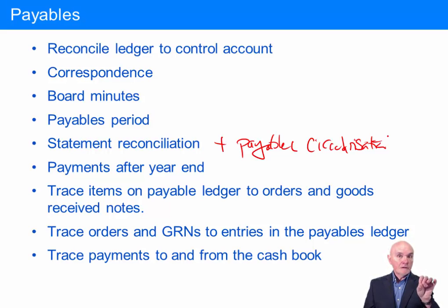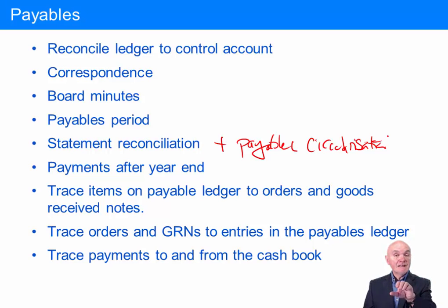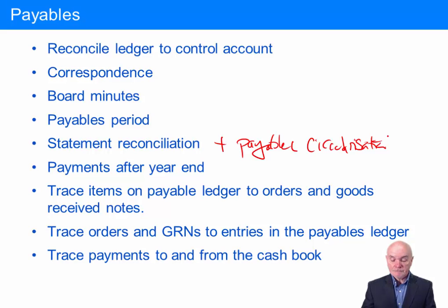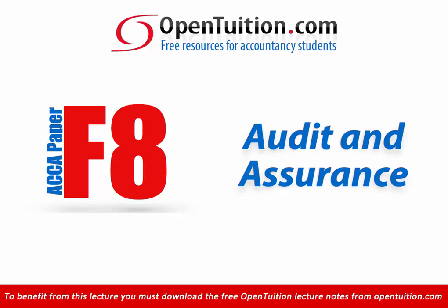For completeness, we can also trace the other way. If you go to the file of orders placed late in the year — say orders in November or December — trace those to a receipt of goods in December, a goods received note or delivery note. We would then expect to see an invoice received in December appearing in the payables ledger. Again, these tracings are all tests of detail.